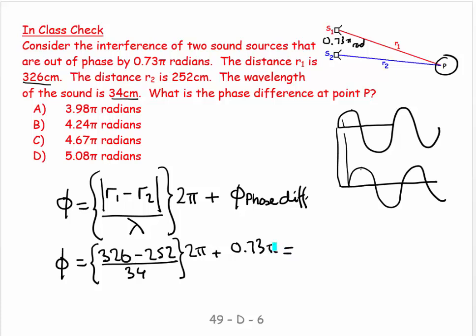It's calculator time. I can say 326 minus 252 enter, divided by 34 enter, times 2 enter. I'm going to leave the π out of this for a second, plus 0.73. I'm getting 5.08, and I left the π alone, so it's 5.08π radians. Why leave the π out of it? Sometimes when you're dealing with these things and you have constants like π, people tend to just leave them as a constant.